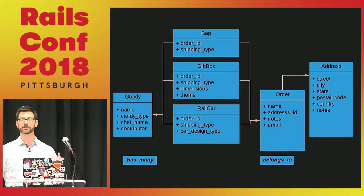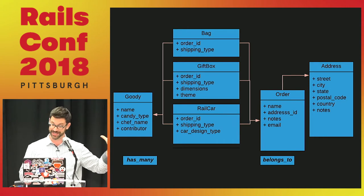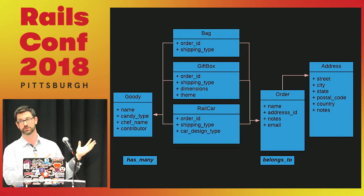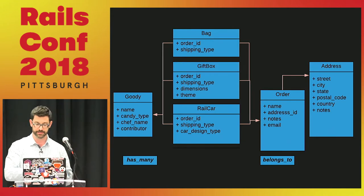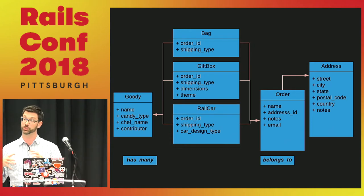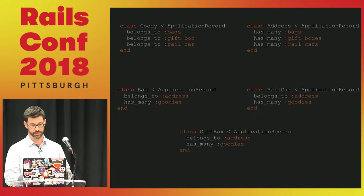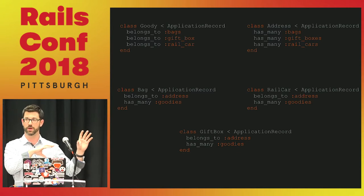Here is a really terrible UML for the back end of what our application is going to look like. You can see naming things is hard. We have our goodies on one side, which have a name, a little description, who made it, and perhaps the contributor that inspired it. In the middle there, you have all the different types of packaging: bags, gift boxes, rail cards. All of those belong to an order, which has who ordered it and where they live, which is related to the address model on the right. This is essentially how the models in our Rails app are going to appear.